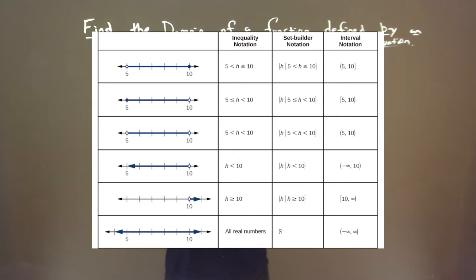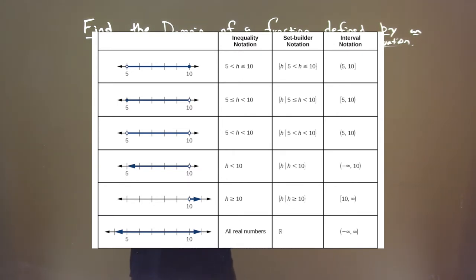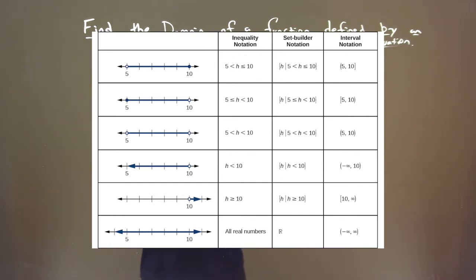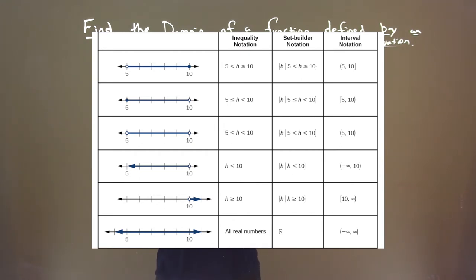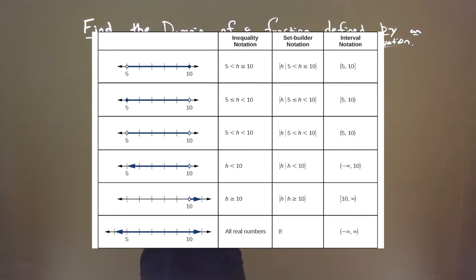In set builder notation, that's H such that 5 is less than H, which is less than or equal to 10. In interval notation, it's parenthesis on the 5, comma, 10 with a bracket. It moves on through all these different examples, showing how to handle negative infinity or positive infinity.